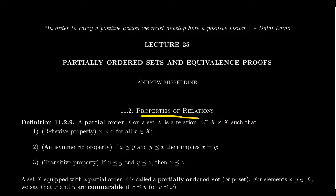We talked about these five properties the most often because these are properties we often want relations to have. We usually want a bunch of them, like three or some. Some of them are mutually exclusive except for trivial cases, so we're not going to get all five. But there are some examples of very important relations that exhibit many of those properties. The one that gets the most attention in a course like Math 3120 is the notion of an equivalence relation, which we will talk about in the very next lecture, number 26.